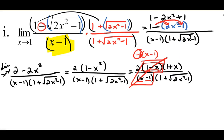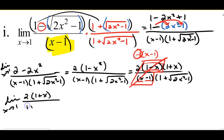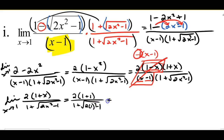Now I can take my limit through direct substitution. As X approaches 1, I'm left with negative 2 times (1 plus X) over (1 plus radical 2X² minus 1). Plugging in 1 for X: 1 plus 1 is 2, so negative 2 times 2 is negative 4... actually 2 times 2 is 4 in the numerator. Then 1 squared times 2 is 2, minus 1 is 1, square root of 1 is 1, plus 1 is 2. So 4 over 2 equals 2.